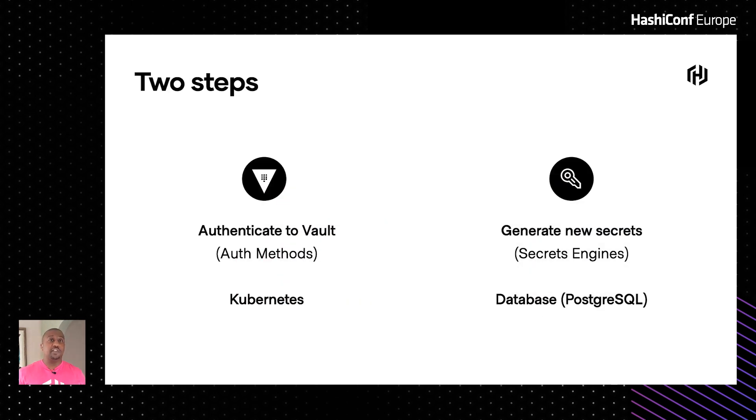To achieve this, the first thing that needs to happen is the application needs to authenticate with Vault. We do that with the concept of auth methods. Auth methods in Vault are a modular concept that allow us to authenticate our applications or humans with Vault itself. In this case, we're using the Kubernetes auth method, which uses the Kubernetes identity construct — a service account — to authenticate the application to Vault.